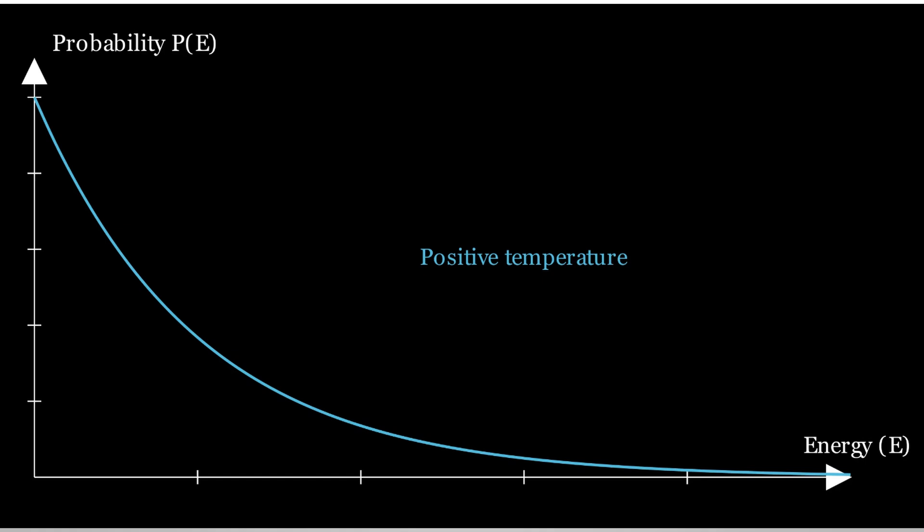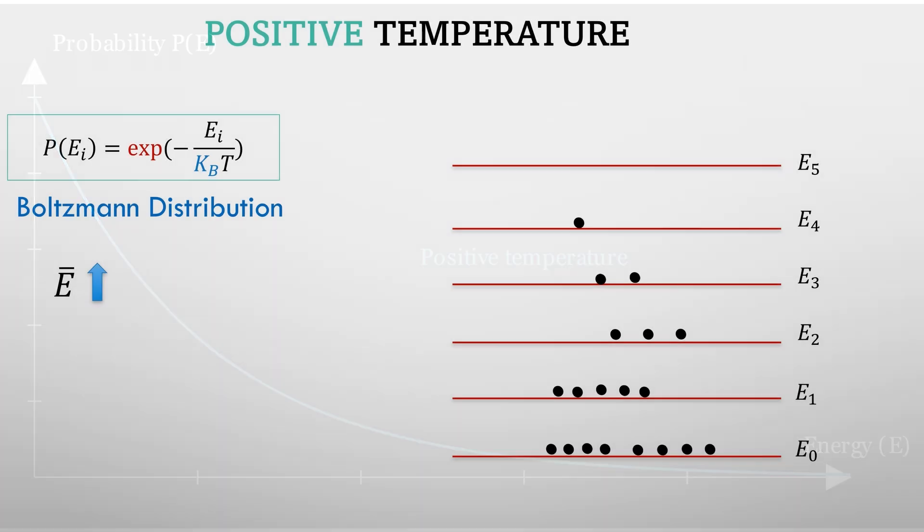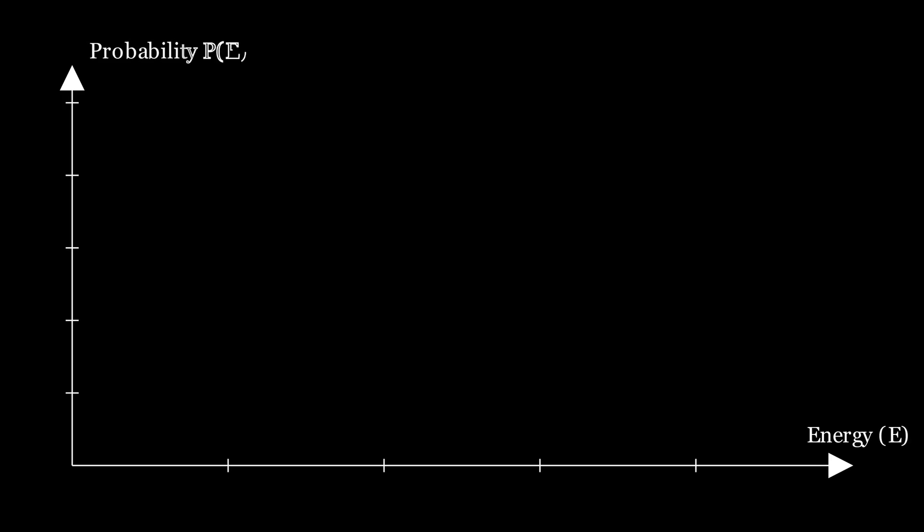The higher the energy of the particular state, lesser its probability of occupancy. The hotter the gas becomes, the broader and shallower this peak becomes until at infinite temperature, the distribution would be completely flat and all states would be equally probable.